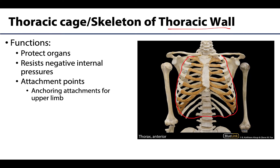The thorax is going to protect organs — that's one of its main functions. It will protect the primary organs of respiration, such as the lungs. The diaphragm also extends into this area, as does the cardiovascular system. The inferior portions of the thoracic cage also protect some of the more superior abdominal organs. The cage will also resist negative or sub-atmospheric internal pressures generated by the elastic recoil of the lungs during respiratory movement.